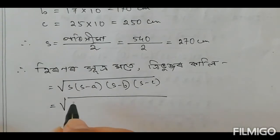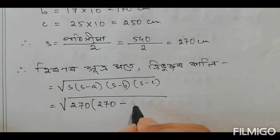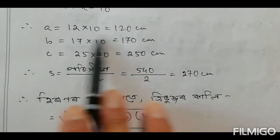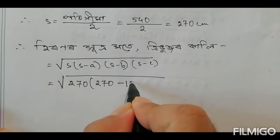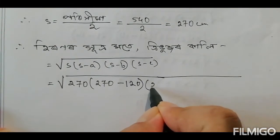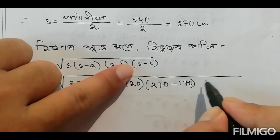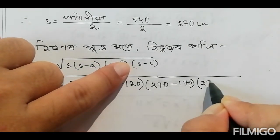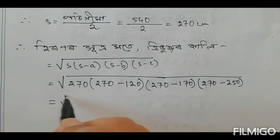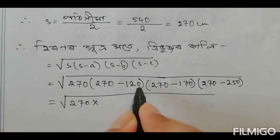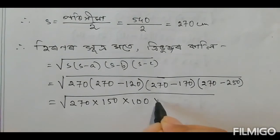S is 270, and S minus A is 120, B is 170, and C is 250. So A is 120 and S minus B is 270 minus 170, and S minus C is 270 minus 250.